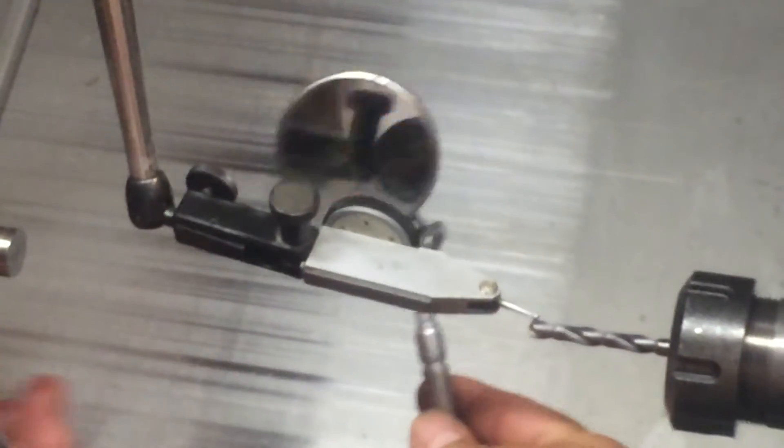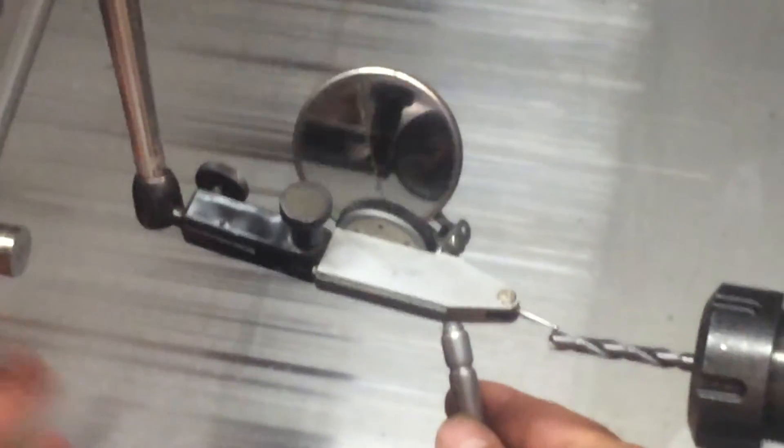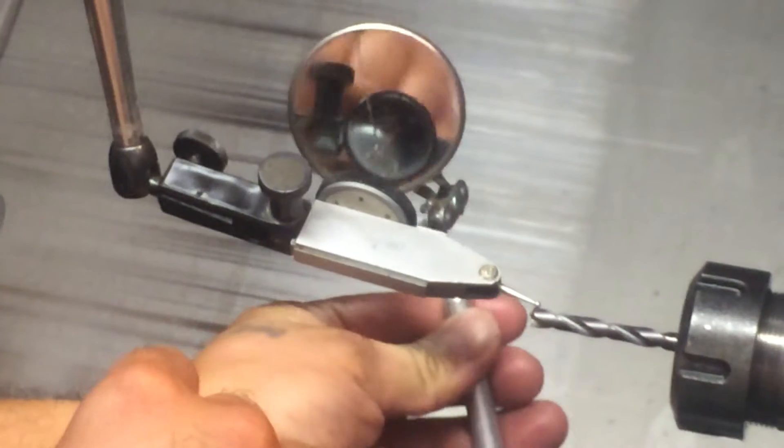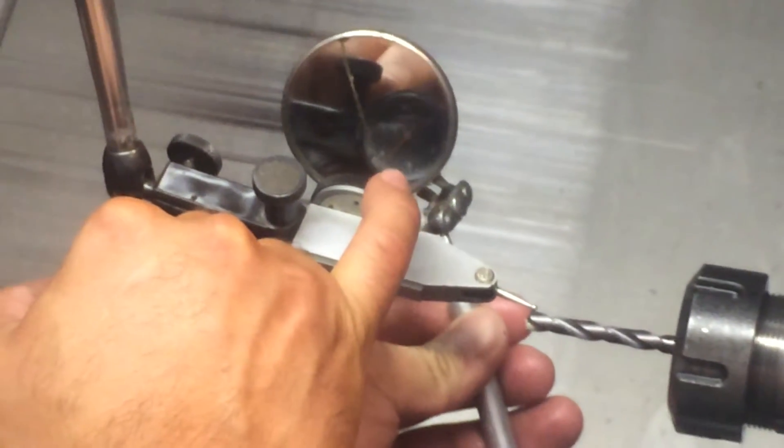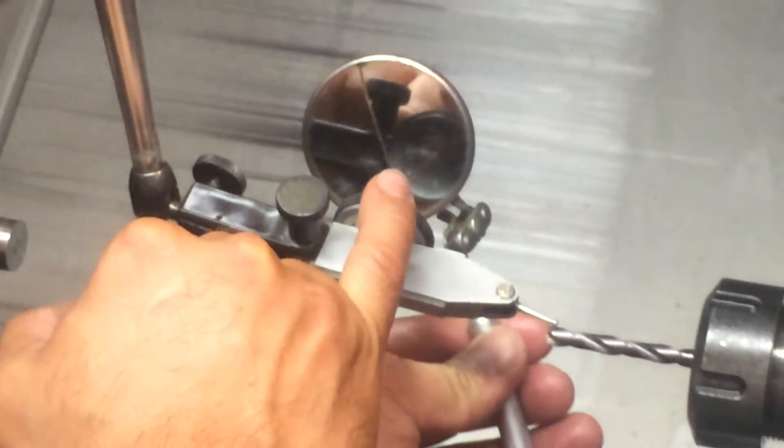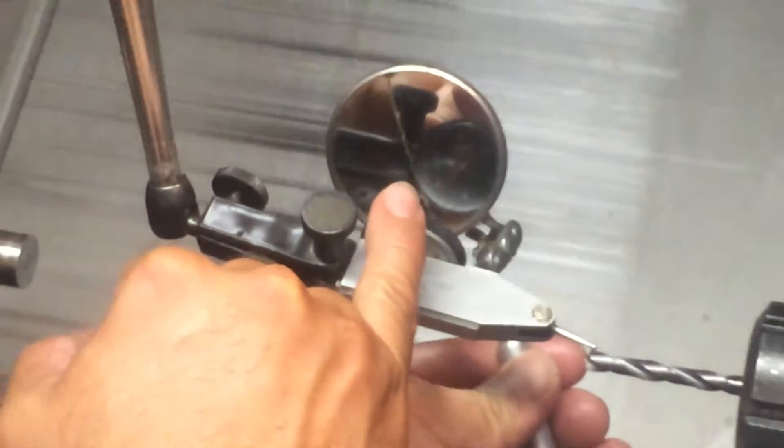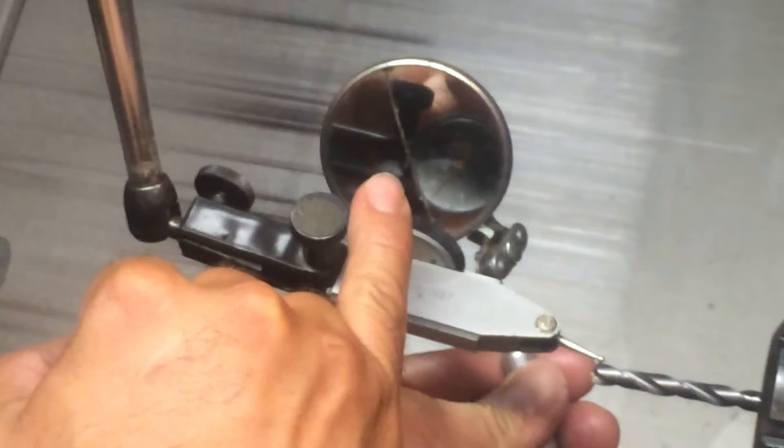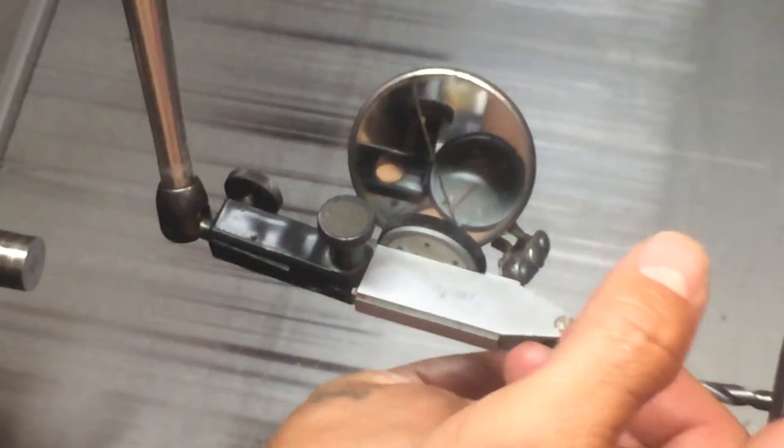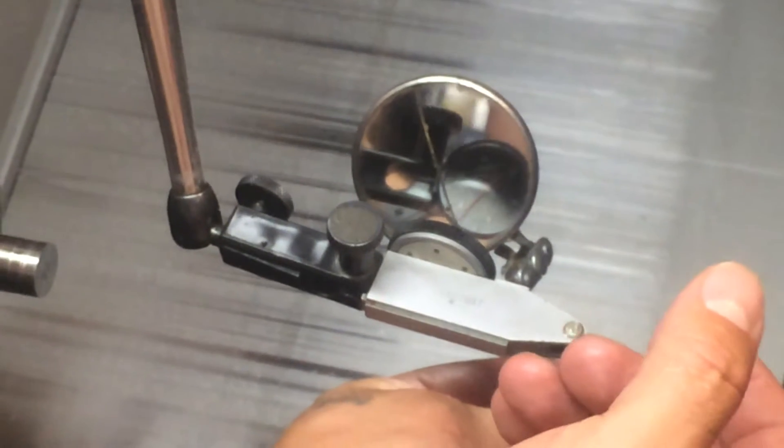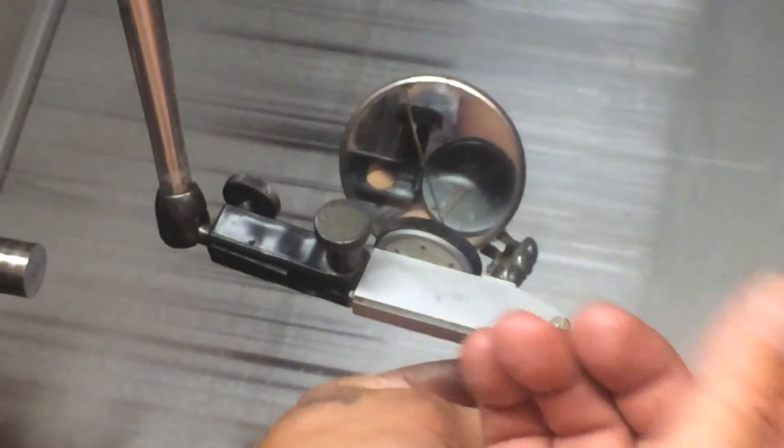I don't know if you can see or not, but right now it's showing right here that from zero, where we zeroed out, we are one, two, three and a half thousandths off. So I'm going to come back half of that tolerance. So if I'm three and a half off, I'm going to come back about one thousand seven tenths.